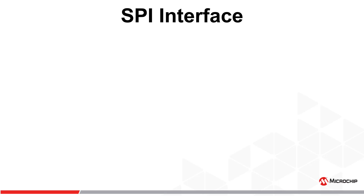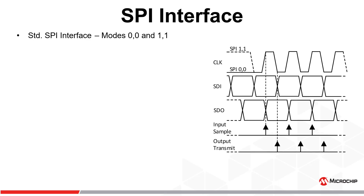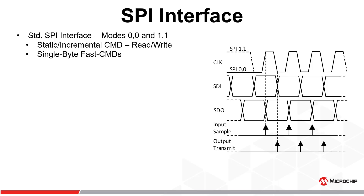The first topic of discussion is the SPI interface. The SPI interface supports standard SPI bus modes 00 and 11 with static and incremental read-write operations, as well as single byte fast commands for performing conversions or managing power consumption. Whether configured for SPI mode 00 or 11, the device samples the SDI input on the rising edge of the bus clock and transmits on the SDO output on the falling edge. The only difference between modes is the default clock state: mode 00 is default low, mode 11 is default high.